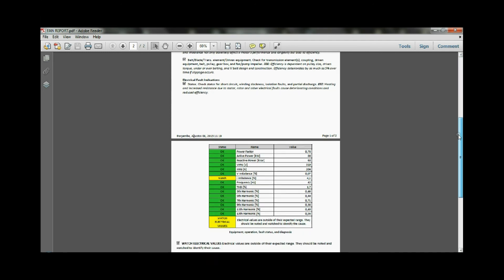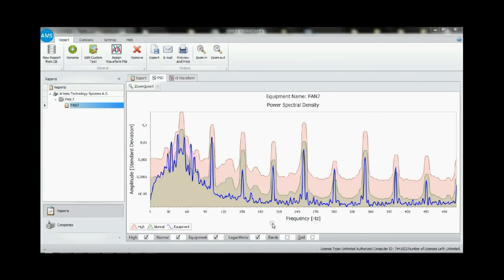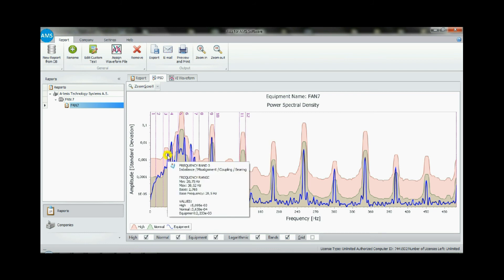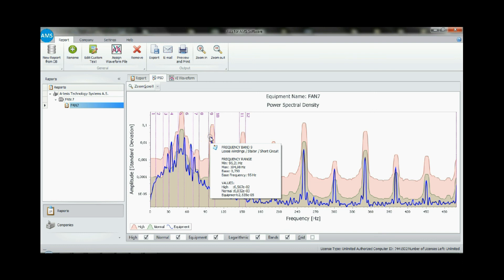For example, efficiency is dependent on pulley size, driven torque, under and over belting, V-belt design and construction. Efficiency deteriorates as much as 5% over time if slippage occurs. Getting the most out of your assets involves parallel improvements in both efficiency and effectiveness.